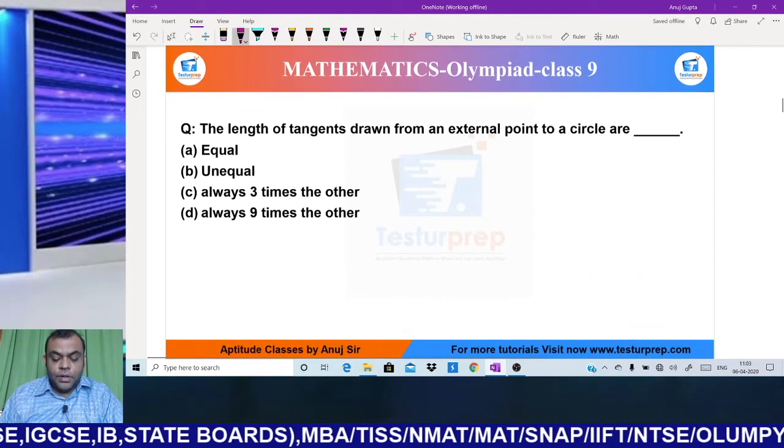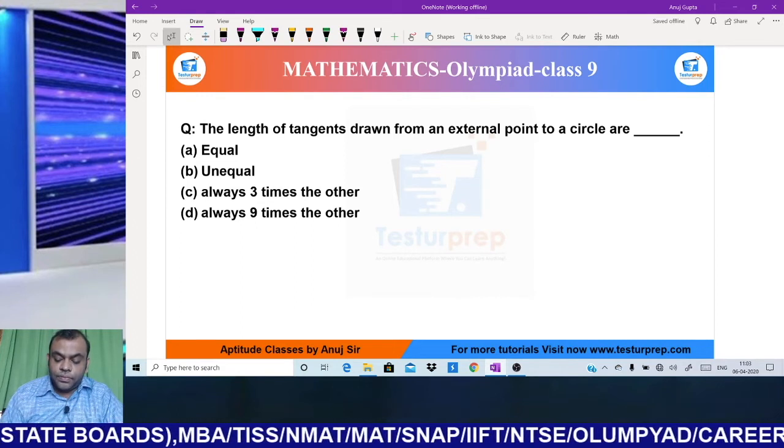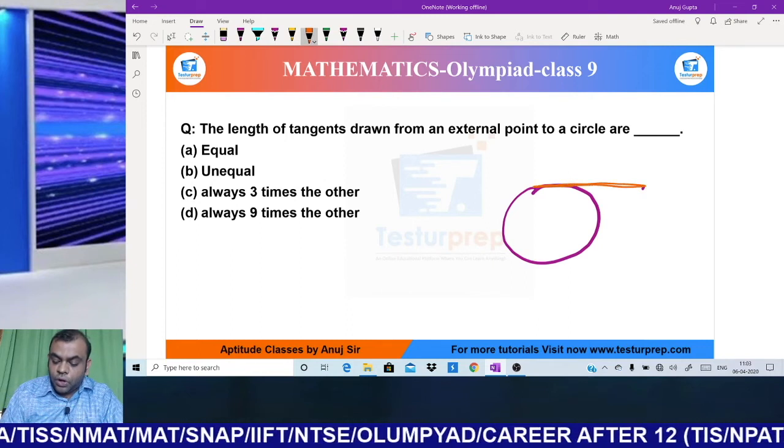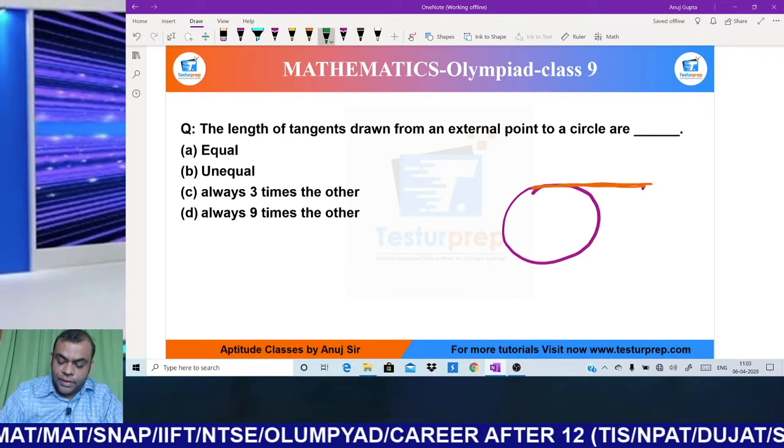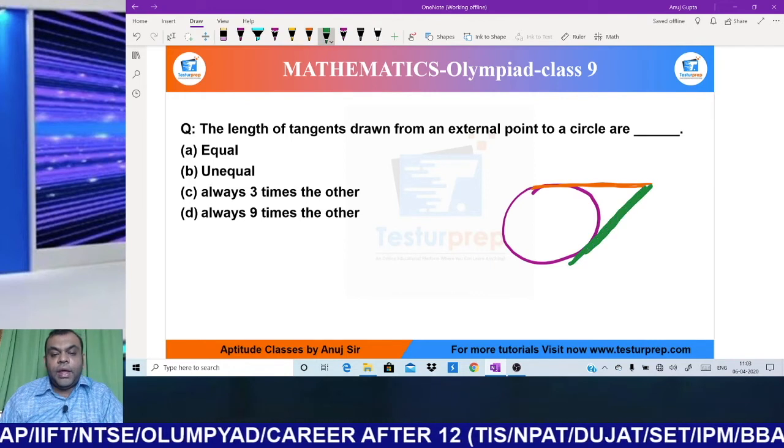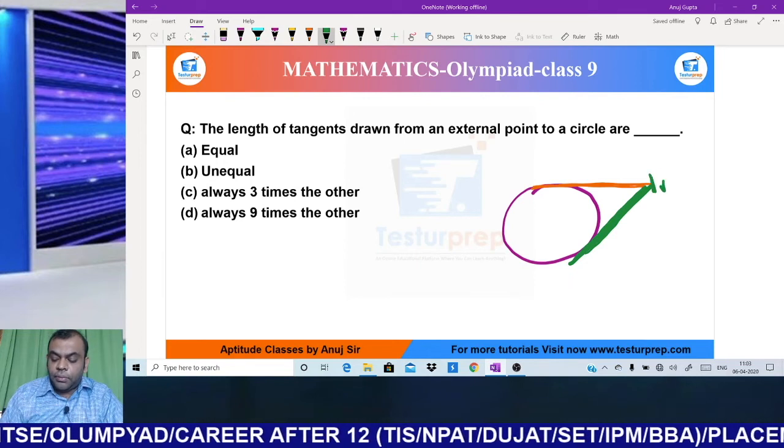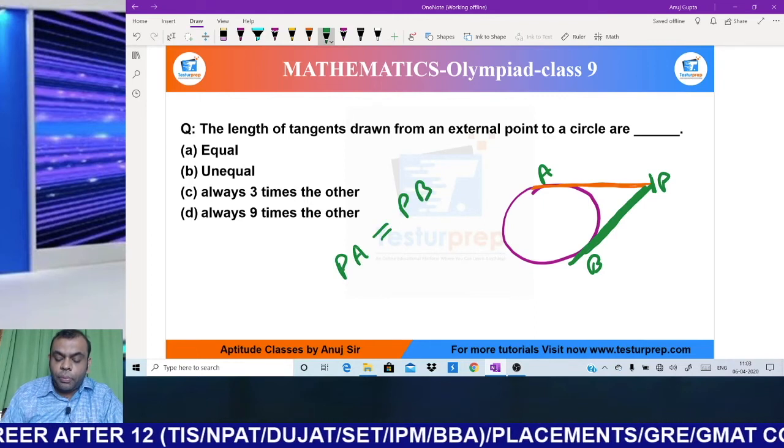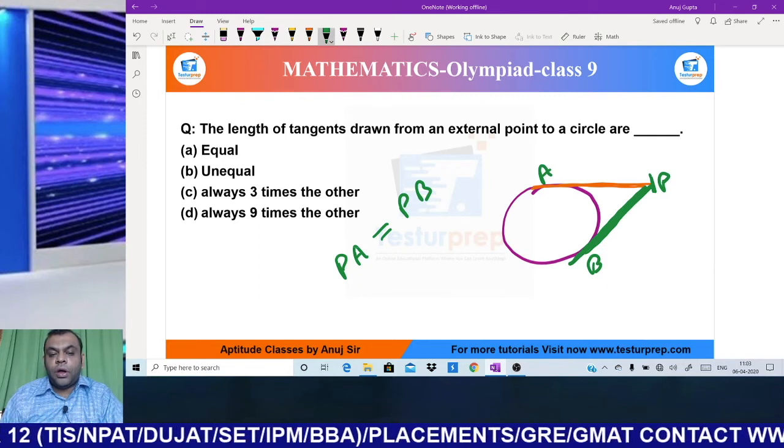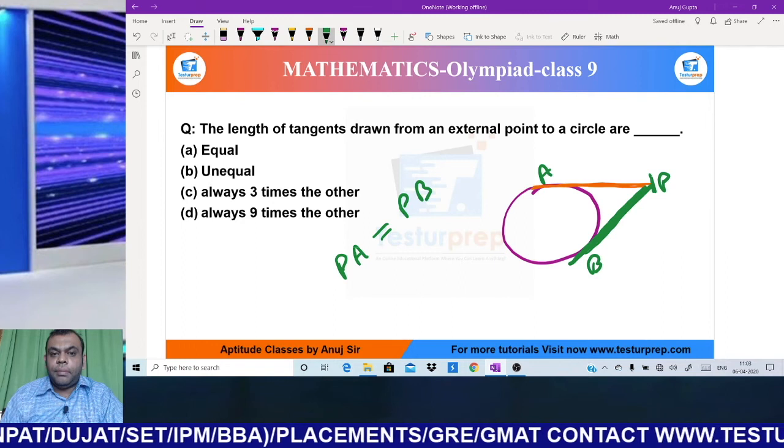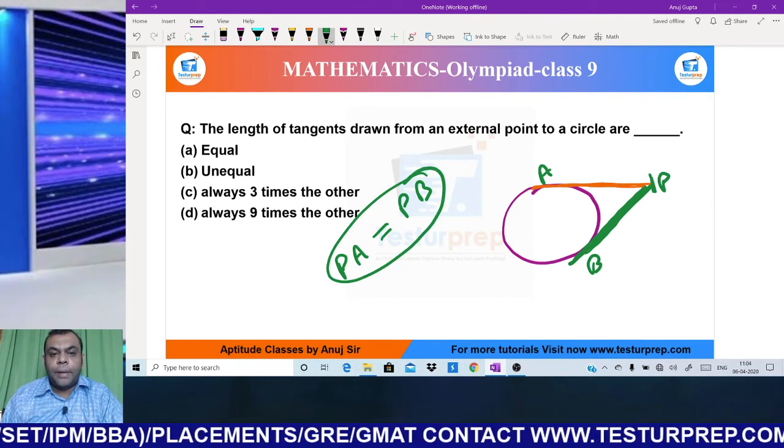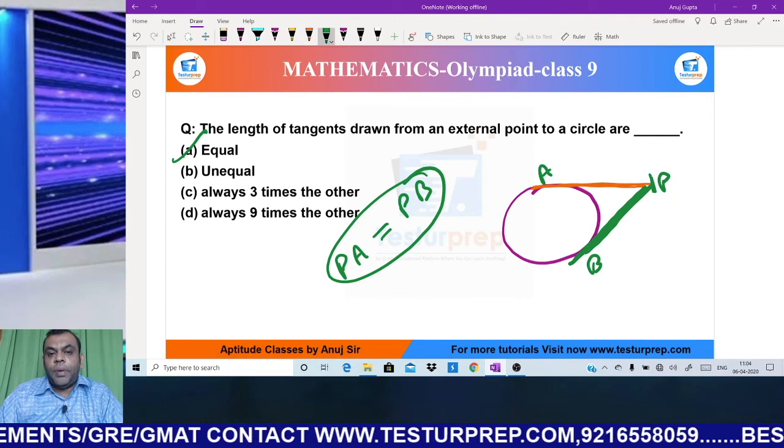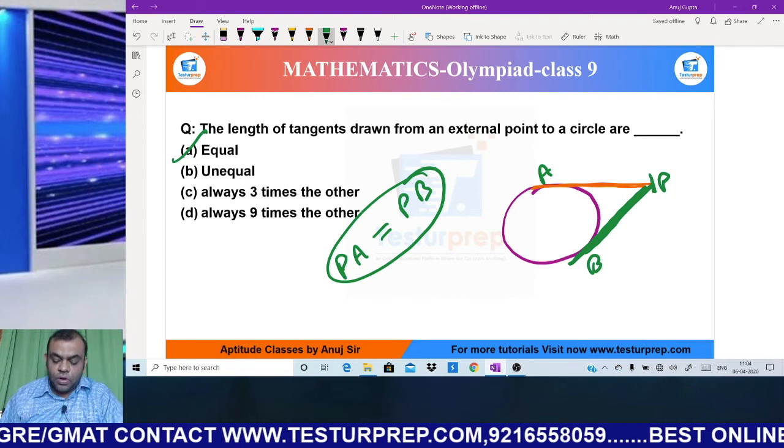My next question says: the length of the tangent drawn from an external point to a circle is? A tangent is any line drawn from outside that touches the circle at one point and exits. If I draw tangents from the same point to the same circle - like PA and PB from point P - then these tangents will be equal. Hence my answer is option A, equal. Using circle geometry we've solved another question.